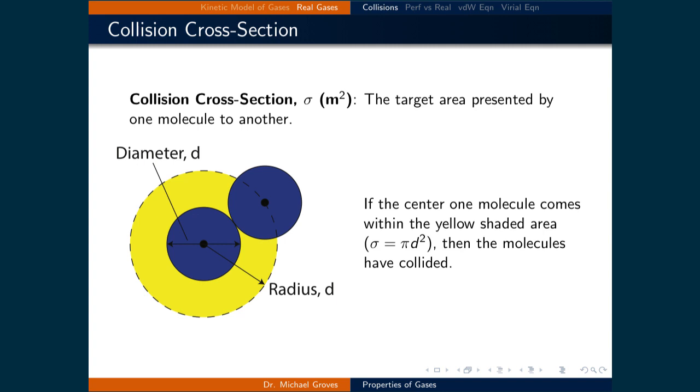The ideal gas law works very well for many situations. However, it's important to understand when it fails so that improved models can be used in those situations. To do that, we need to better quantify how often molecules collide.